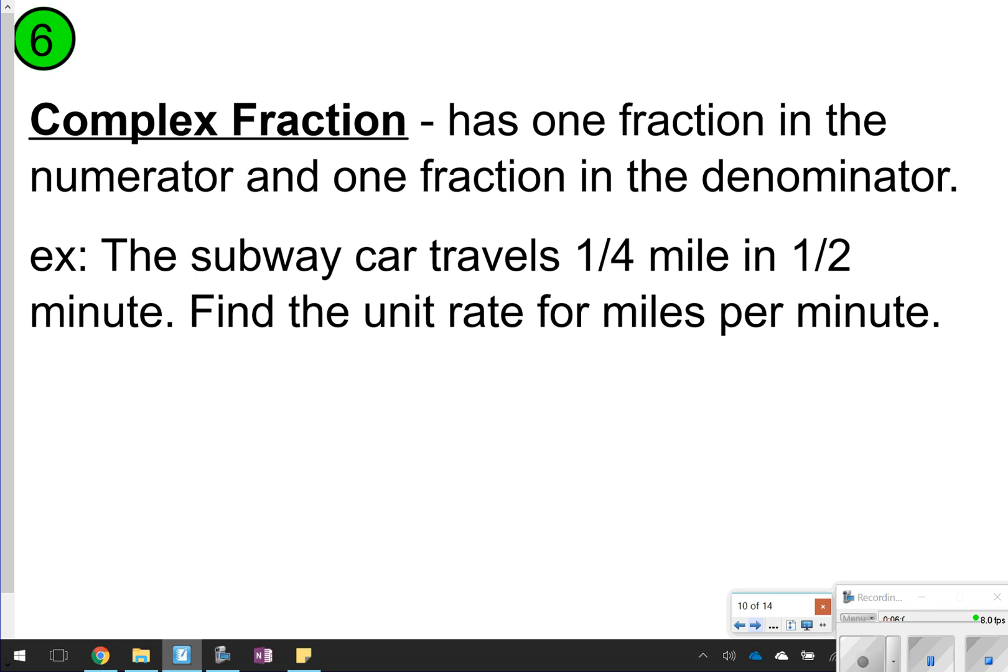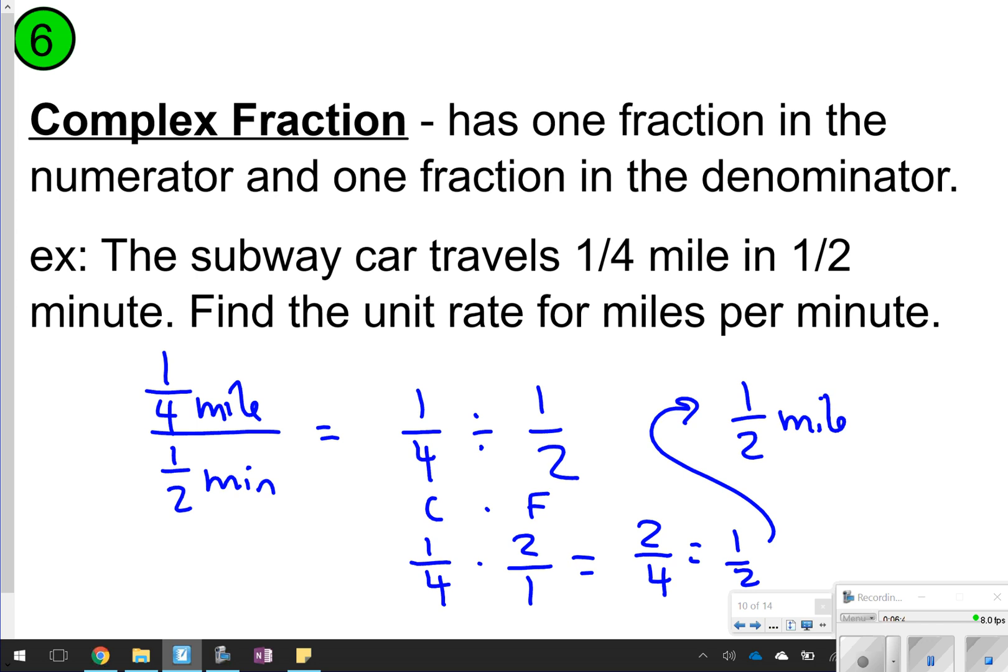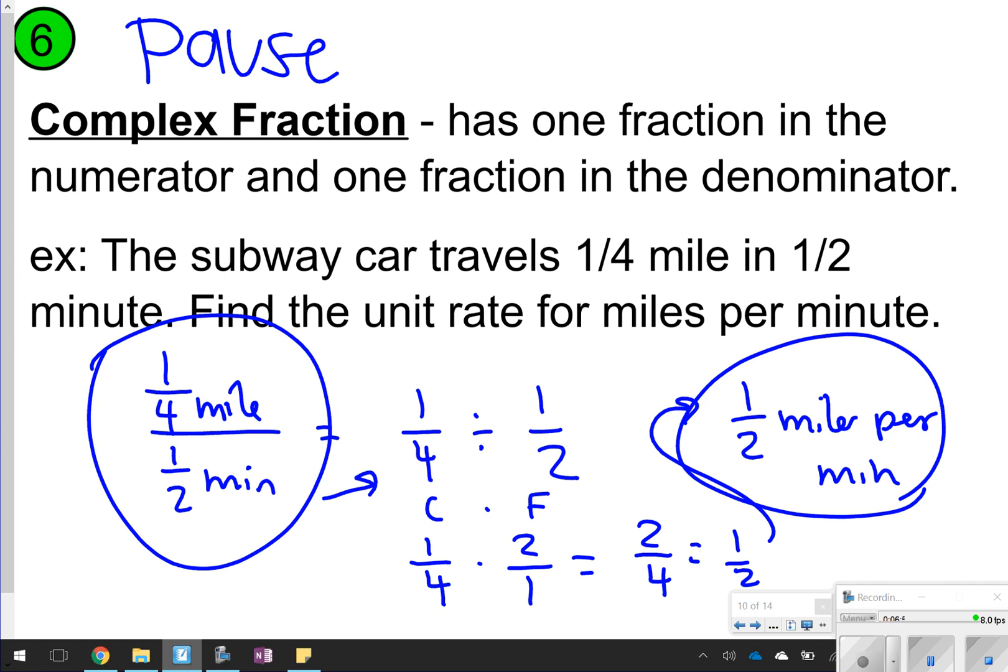Number 6 is a complex fraction. This is the next thing you're going to be writing down in your notes. Basically, it's two fractions within a fraction. So as this example, it says the subway car travels a fourth of a mile in one-half minute. Find the unit rate for miles per minute. One way you could write that is one-fourth mile over one-half minute, which essentially means one-fourth divided by one-half. Remember that fractions are a little bit tricky because you have to do copy flip to show that you're dividing them. So whenever you copy flip it, you get 2 over 4, which is equal to one-half. So that means your unit rate is a half mile per minute. Go ahead and take time now to pause the video. Write down what a complex fraction is and maybe even write down this example and how I showed it. Once you're done, click play, so we're going to try a question or two.